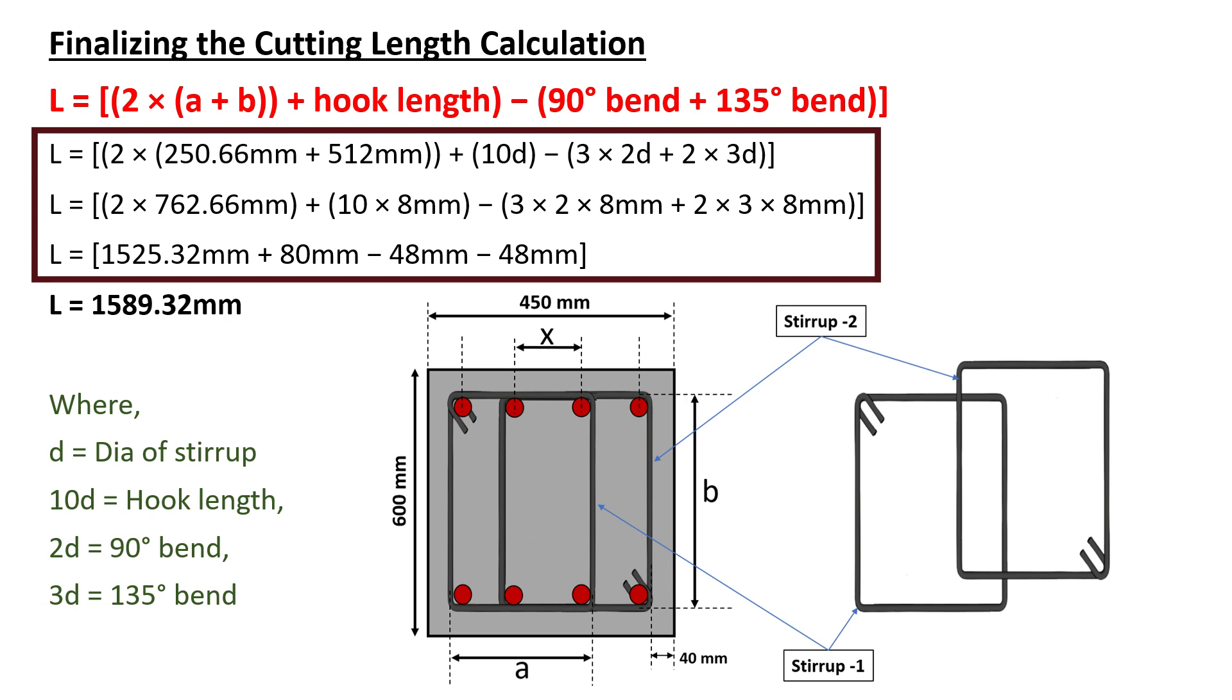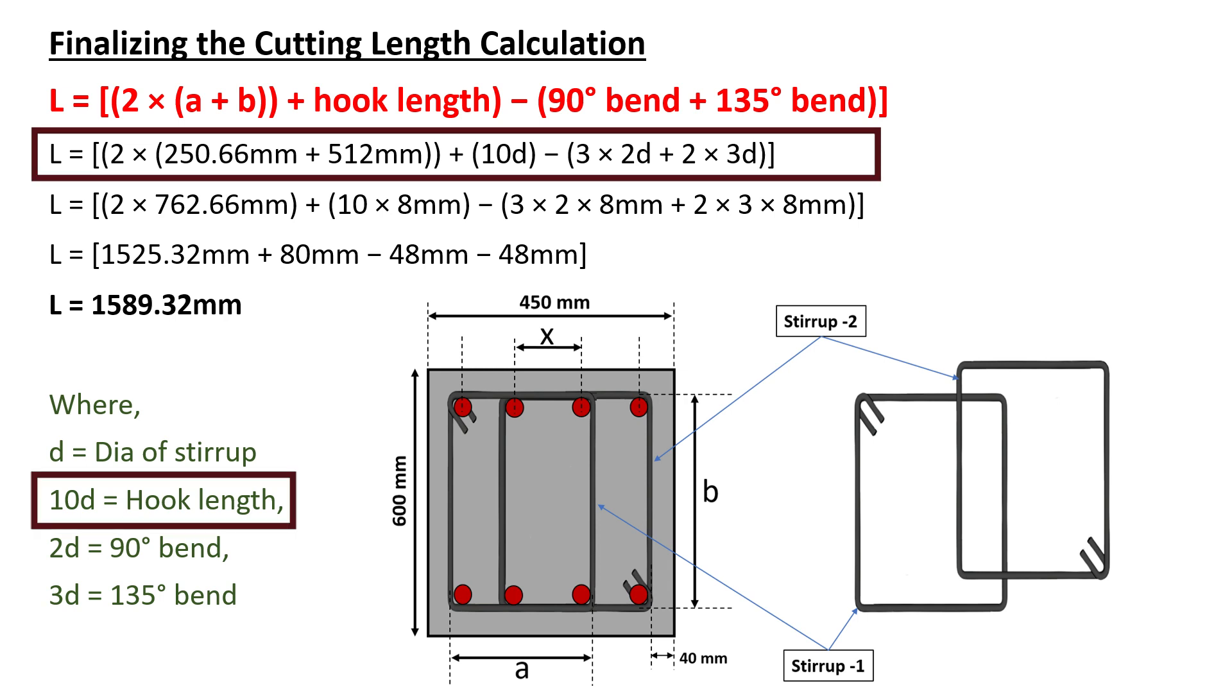It shall be noted that in the above equation, we have considered a length of 10 times the diameter for the hook, that's 10D. We have subtracted 2 times the diameter for each of the three 90 degree bends, that's 2D, and 3 times the diameter for each of the two 135 degree bends, as indicated in the drawing.